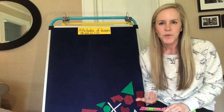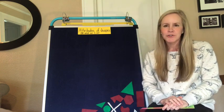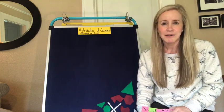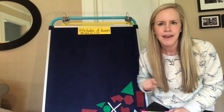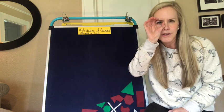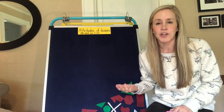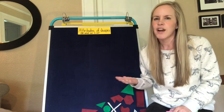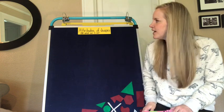Hi first graders, we get to do math today and we get to do geometry. Geometry is math and most of it is all about shapes, and that's what we're going to talk about today. We're going to talk about attributes of shapes. Attributes of shapes are things that you can see with your eyes. We might also say characteristics or traits, which kind of sounds like something you learned in reading too.